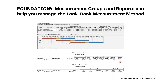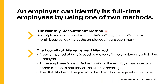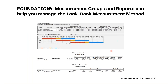The monthly measurement method does not require any setup in Foundation, and it is commonly used by employers that simply have a waiting period prior to the offer of coverage. For example, most clients hire an employee with the intent of them being full-time and might have a 60-day waiting period before their offer of coverage — that essentially falls under the monthly measurement method. The look-back measurement method setup is only needed if you are tracking whether an employee will be full-time and want to use measurement, administrative, and stability periods — Foundation can help you manage that.